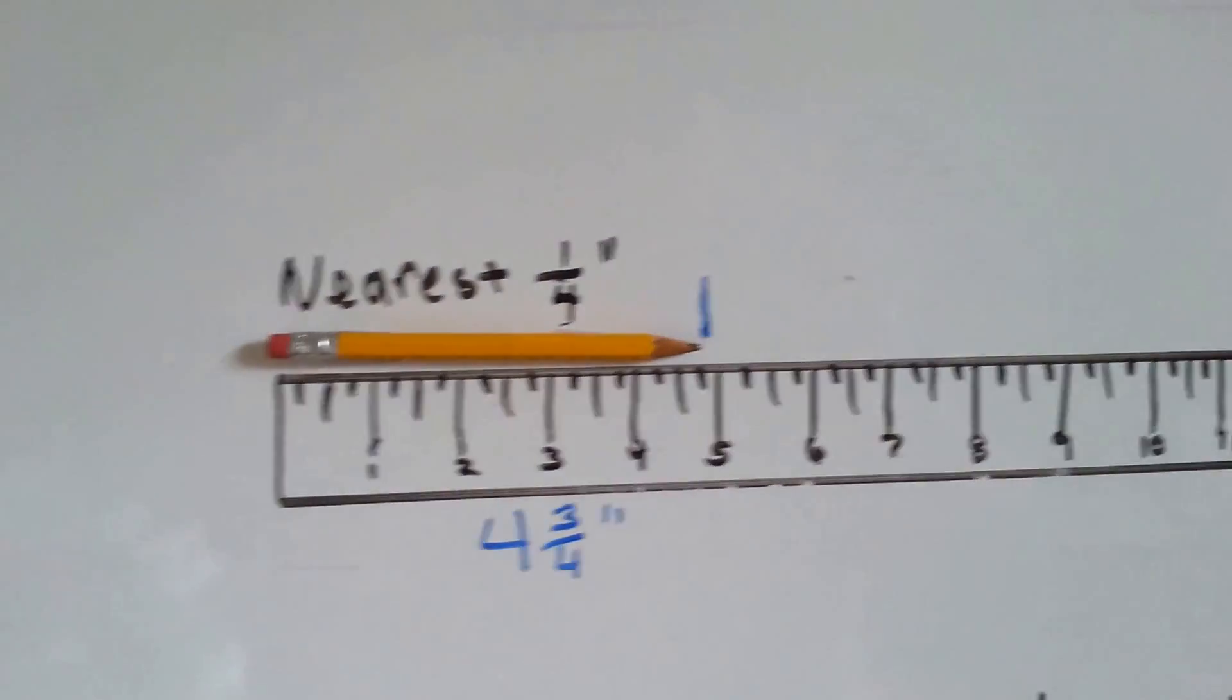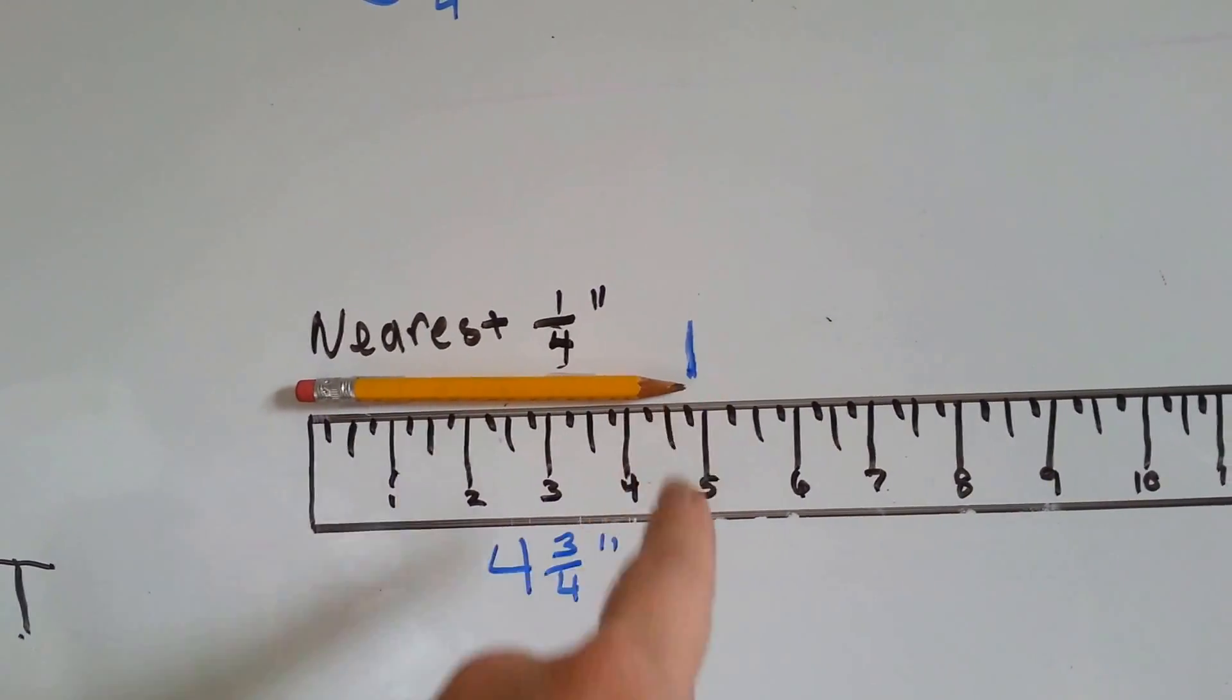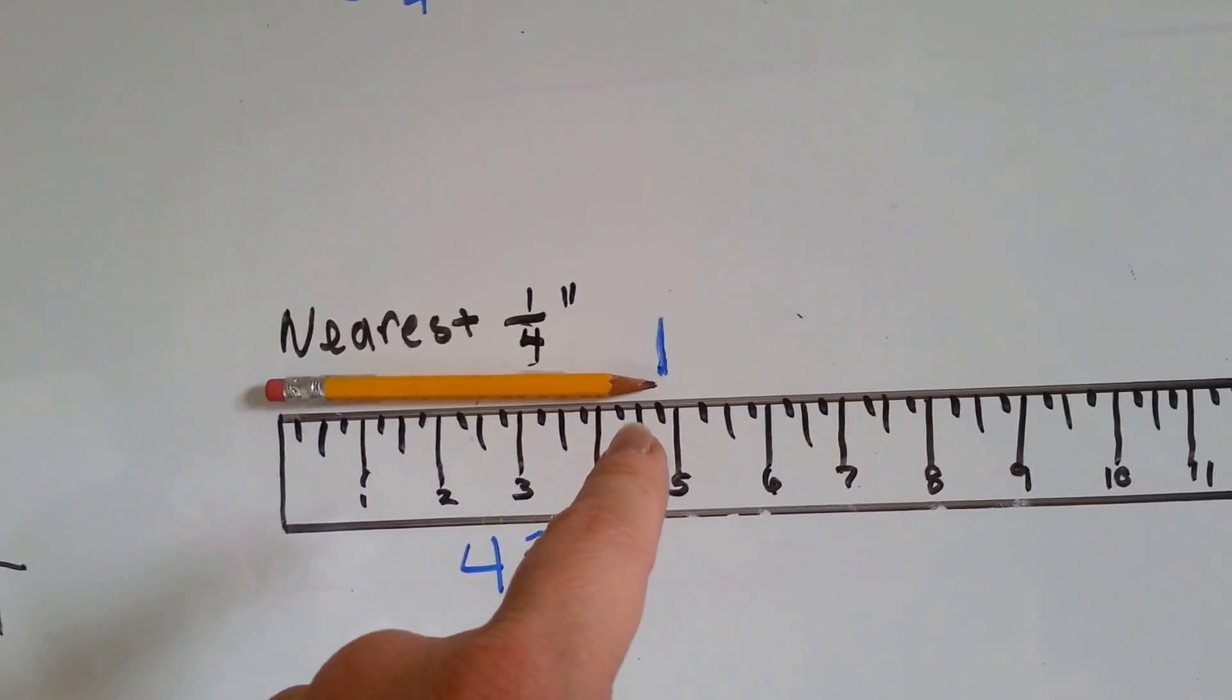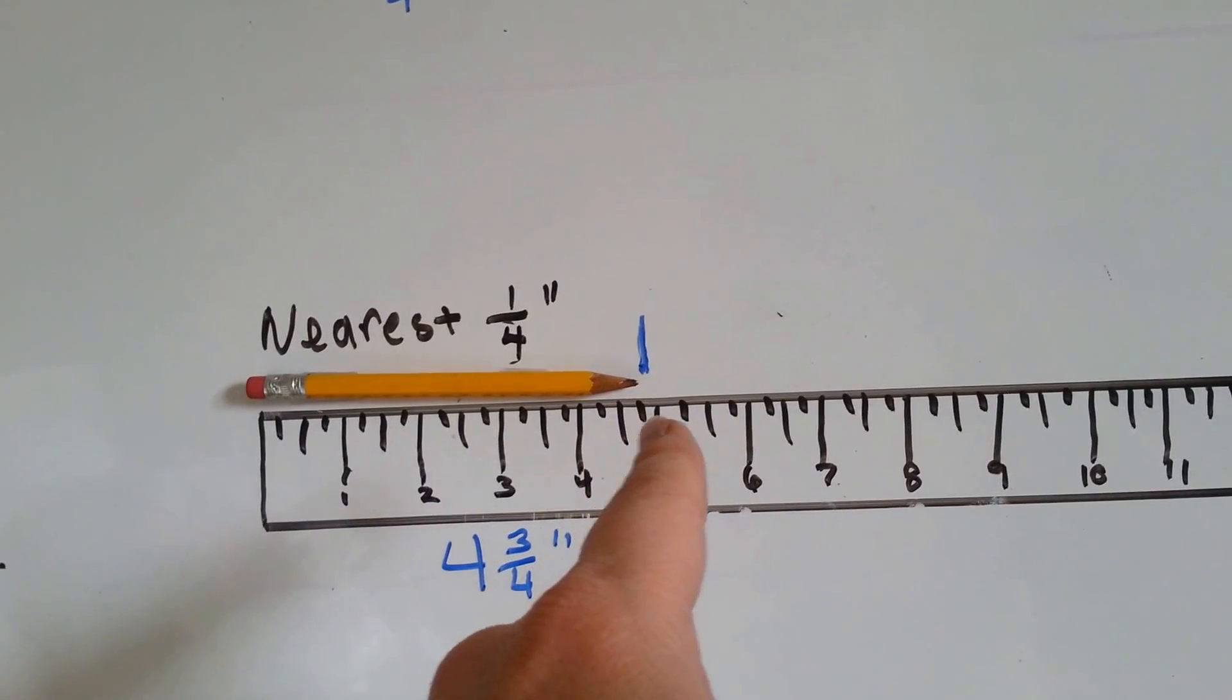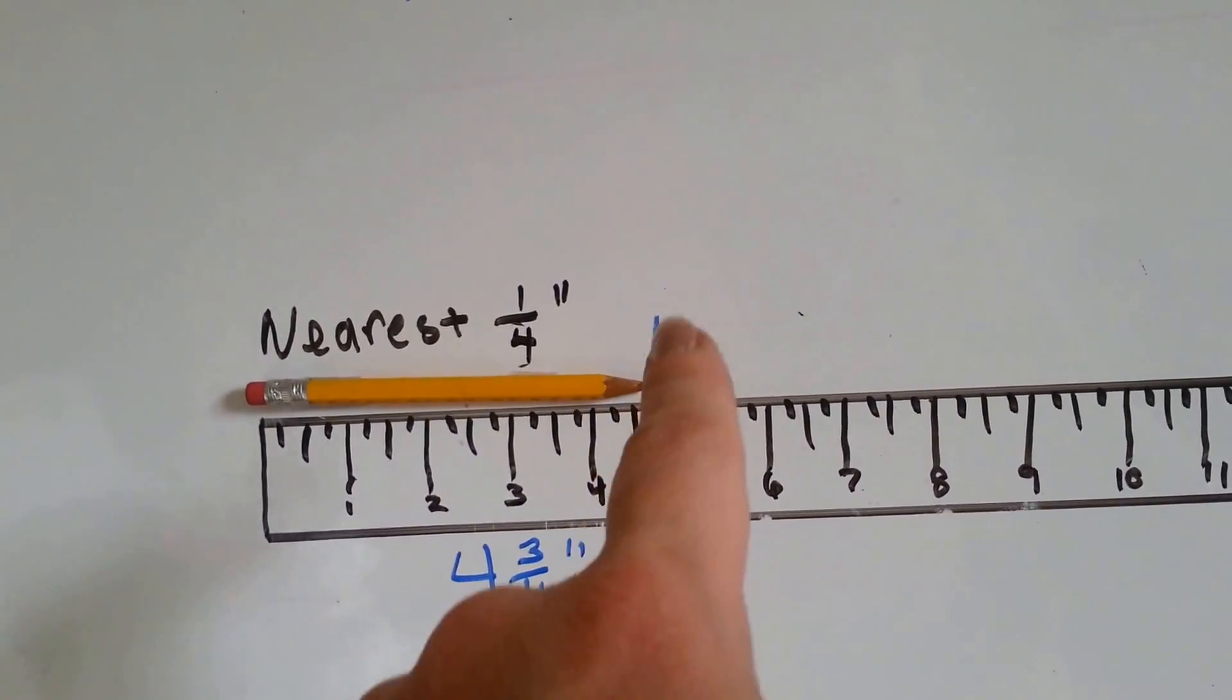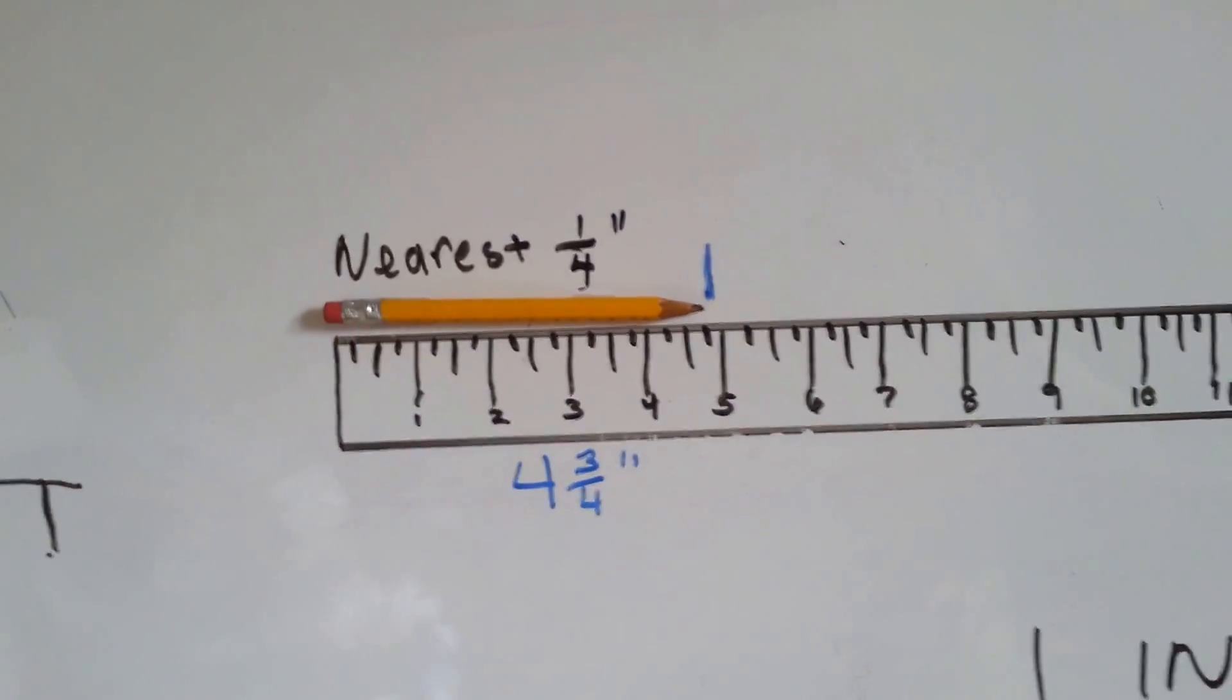How about this pencil? We line the pencil up on this side so it's perfectly on the edge. And then we look over here to see to the nearest one-fourth where it's at. One, two, three, four inches, four and a half inches, and that's a quarter inch. And there's one, two, three quarter inches in this four inch area. So that's four and three-fourths inches for the pencil.